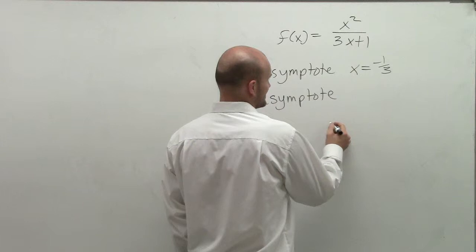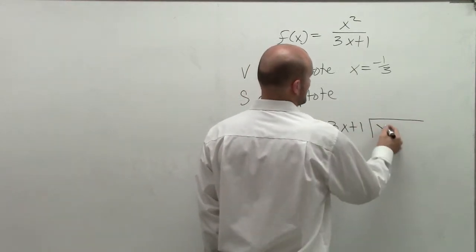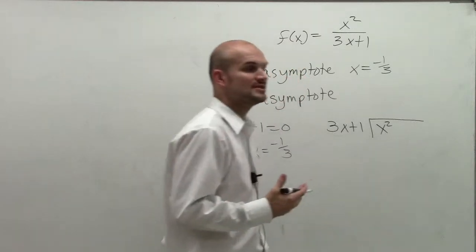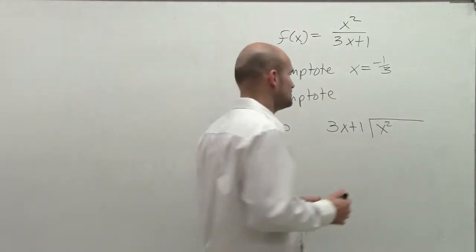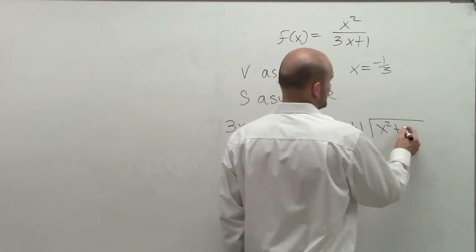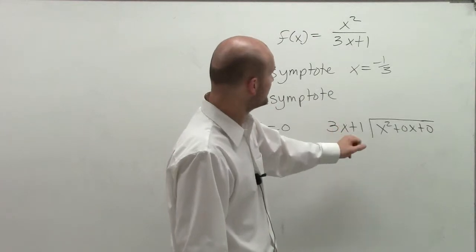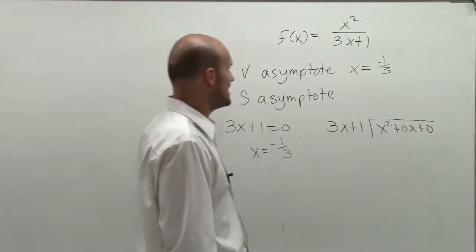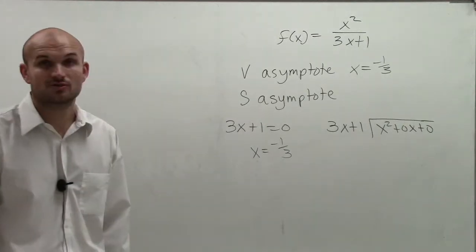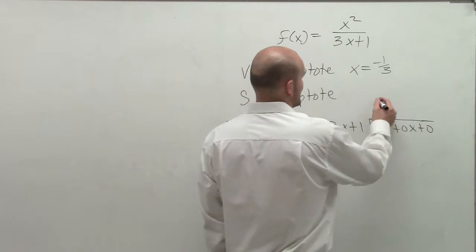So I'm going to write 3x plus 1 divides into x squared. Remember, when using long division, add in those zeros for the value placements we don't have. So x squared plus 0x plus 0. So I look at this and say, does 3x divide into x squared? Yes, it does. It divides in there 1/3 x times.